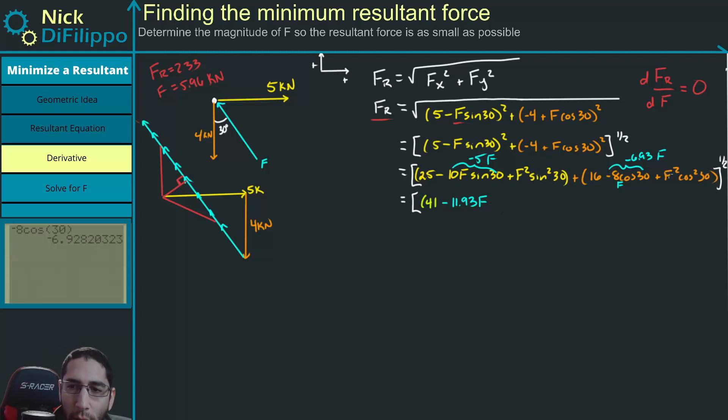And then what happens on this term? Well, I can factor out the F squared. And if I do that, so F squared sine squared 30 plus F squared cosine squared 30. Factor out an F squared. I get sine squared 30 plus cosine squared 30. And hopefully you see that this relationship right here is just equal to 1. So I'm only left with F squared. So I get plus F squared. And this is to the one-half.